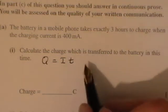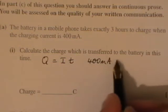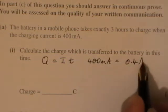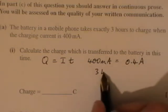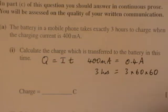What we need to just be careful of here is it's 400 milliamps, which is equal to 0.4 amps, and then it's 3 hours, which is equal to 3 times 60 times 60 seconds.